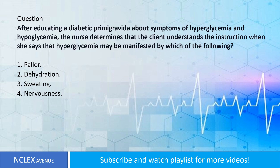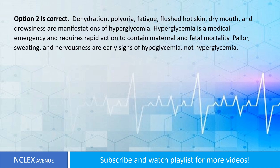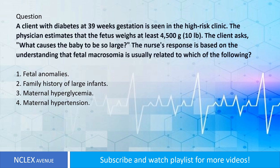Question: After educating a diabetic primigravida about symptoms of hyperglycemia and hypoglycemia, the nurse determines that the client understands the instruction when she says that hyperglycemia may be manifested by which of the following? One: pallor. Two: dehydration. Three: sweating. Four: nervousness. Answer: Option two is correct. Dehydration, polyuria, fatigue, flushed hot skin, dry mouth, and drowsiness are manifestations of hyperglycemia. Hyperglycemia is a medical emergency requiring rapid action to prevent maternal and fetal mortality. Pallor, sweating, and nervousness are early signs of hypoglycemia, not hyperglycemia.